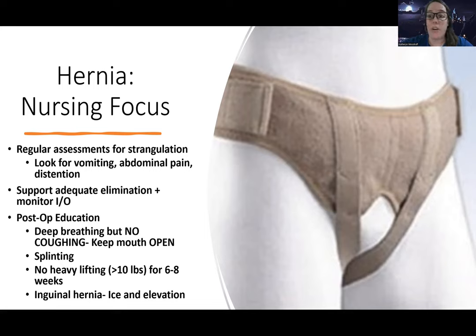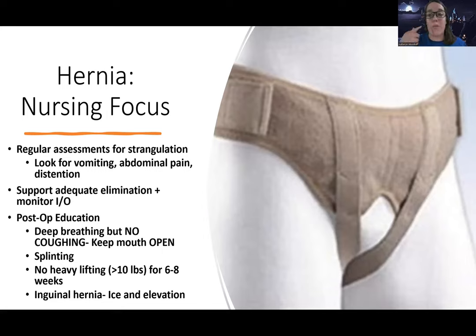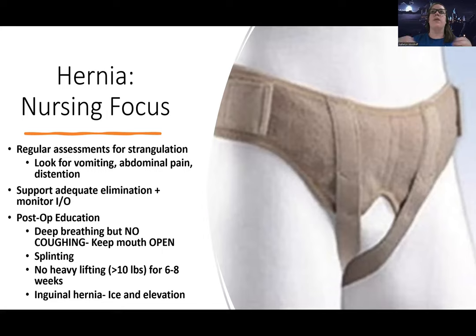If they end up having a hernia repair, we're going to teach them: this is something where there was a lot of pressure and we don't want to make that worse or rip any incisions. They can take deep breaths, but they shouldn't cough. If they have to cough — which everyone usually does at some point — tell them to cough with their mouth open versus closed, because closed creates more intra-abdominal pressure. We're also going to teach them to splint — putting their hands on the abdomen or wherever the hernia was — to apply pressure and help ease the strain from coughing so there's less chance of sutures ripping. Teach them no heavy lifting, which means greater than 10 pounds for six to eight weeks.